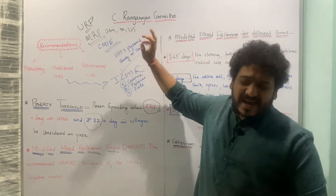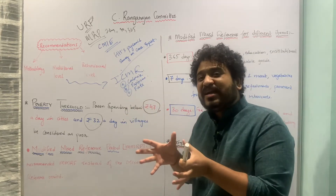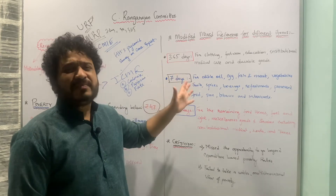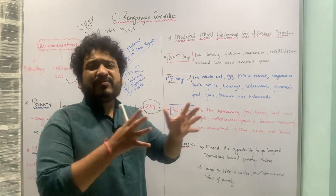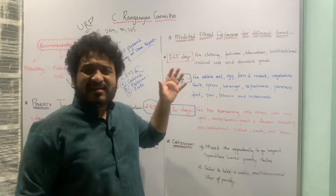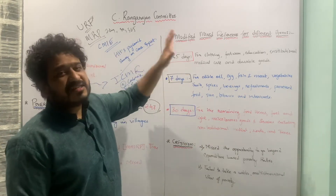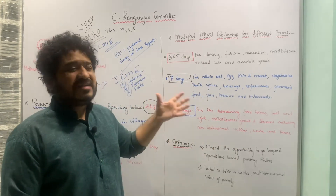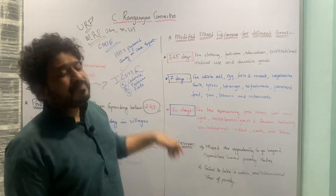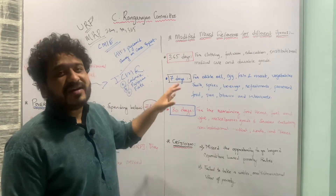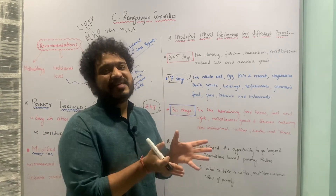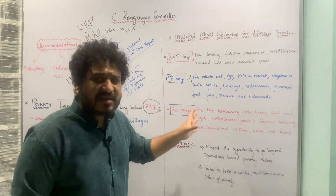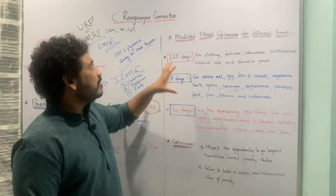This is how the Modified Mixed Reference Period looks. If you recollect, previous committees used consumption baskets for 7, 30, and 365 days, but those baskets were a little narrow. Here the basket is a little broader. However, one criticism is that they have not moved away from the consumption-based poverty line — they just modified the mixed reference period by adding different goods to different recall day baskets.